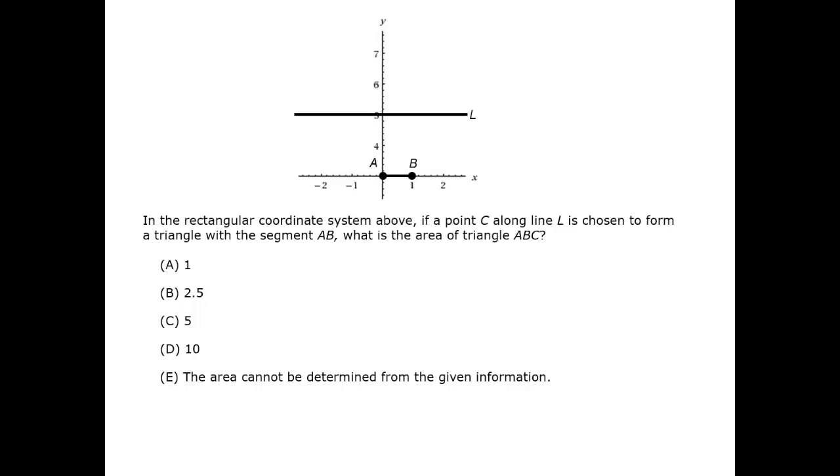The definition of the height relative to AB is that it's the length of the line that is perpendicular to the base and which joins the other vertex of the triangle with the base, or an extension of the base.